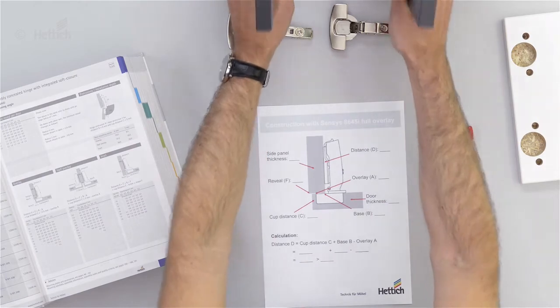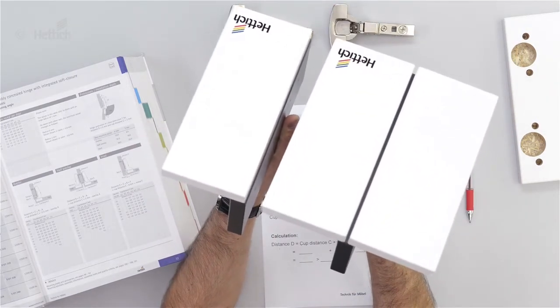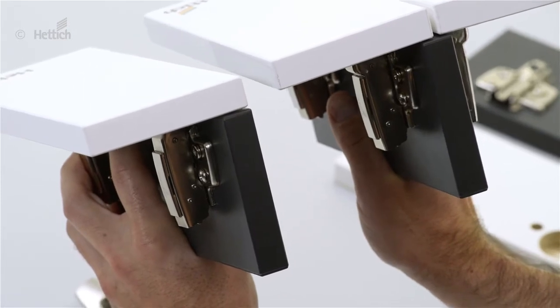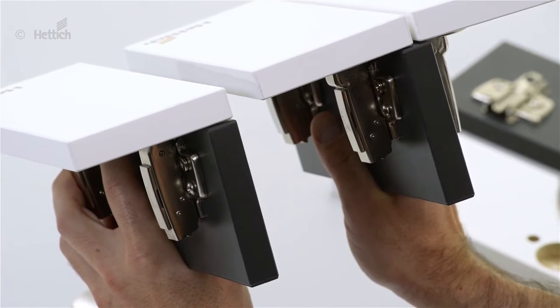We can also have a look here on the mock-ups and you see that there is a different shape of the hinge arm, which gives us the base B of the hinge, what we need for calculating the mounting plate distance.